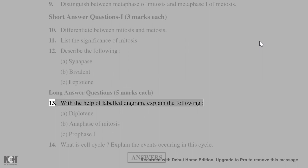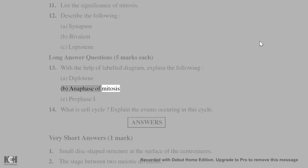Long answer questions (5 marks each): (13) With the help of labeled diagrams, explain the following: (A) Diplotene, (B) Anaphase of mitosis, (C) Prophase I. (14) What is cell cycle? Explain the events occurring in this cycle.